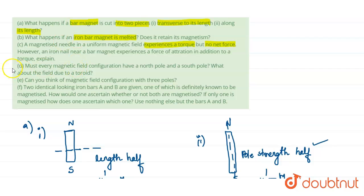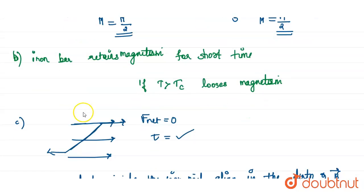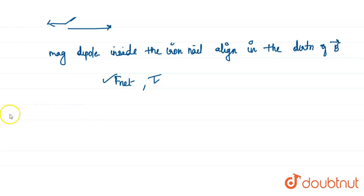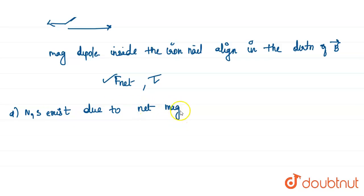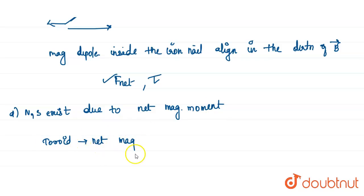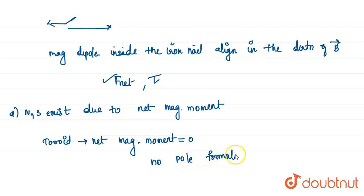What does question D ask? Must every magnetic field configuration have a north pole and a south pole? What about the field due to a toroid? The answer is: it is not necessary that both poles exist. North and south poles exist due to the presence of a net magnetic moment. But in the case of a toroid and a long straight conductor, the net magnetic moment is equal to zero, so there is no pole formation in such cases.